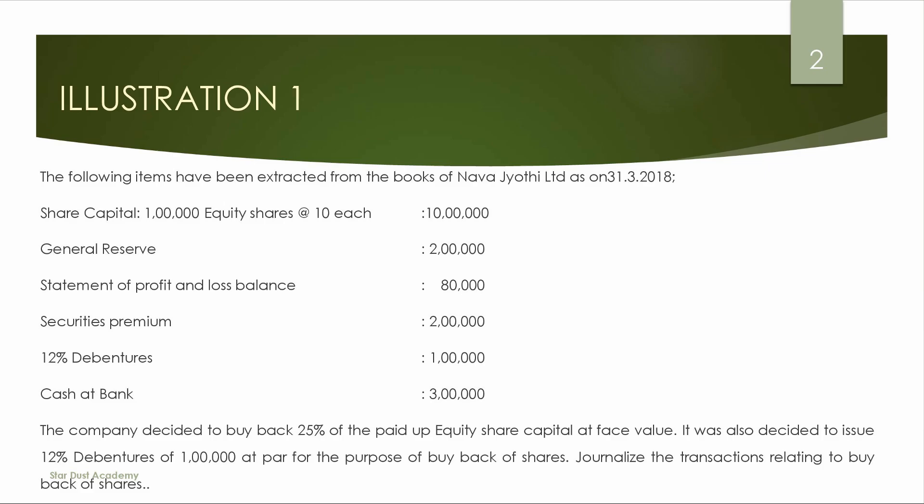General reserve: 2 lakhs. Statement of profit and loss account balance: 80,000. Securities premium: 2 lakhs. 12% debentures: 1 lakh. Cash at bank: 3 lakhs.